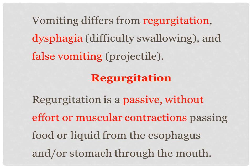Vomiting requires differentiation from regurgitation, dysphagia (difficulty of swallowing), and false vomiting. When the owner brings an animal to the hospital, he complains only of vomiting; he will not differentiate regurgitation, dysphagia, or false vomiting. So the clinician is required to differentiate these conditions, because we have to rely on the history, and in the history the owner will only say there is vomiting.